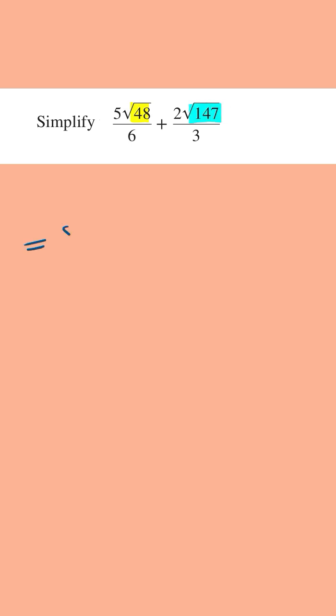We can write this as 5 times the square root of, now 48, this is equal to or is the same as 16 times 3, where 16 is the biggest square factor. And so this is going to be all over 6, and then we've got plus 2 times, now 147, this is the same as 49 times 3, where 49 is the biggest square factor, and this is going to be all over 3.